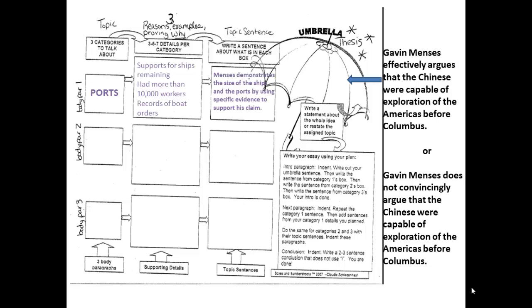That leads me to my topic sentence. This is where I'm going to draw on those criteria. If you look to your criteria handout, you can use that to help you write your topic sentence. Mine would be: Menzies demonstrated the size of the ships and ports by using specific evidence to support his claim. There I take my topic from the left, I combine that with the criteria, and I use it to support my thesis.